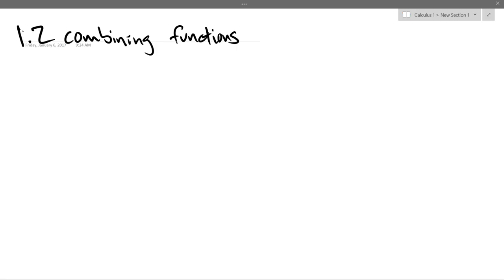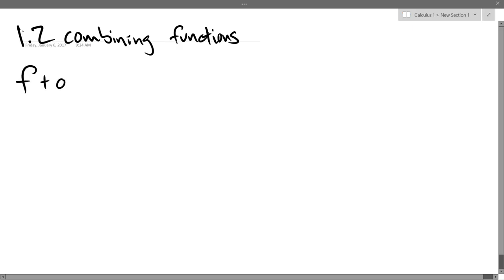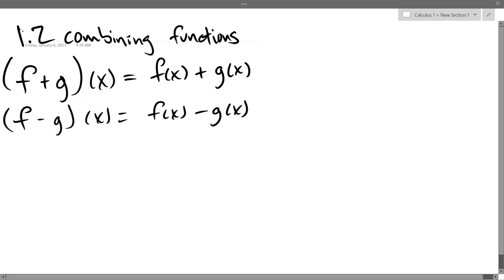All right, combining functions, we'll go with sum and difference first. So if you see two functions being added together, f plus g of x, what we really mean is f of x and g of x separately and add them together. Same thing with minus. And products, I will never use this notation because it's going to look a lot like function composition notation. The only difference is that little dot becomes a little circle, which could be very easily confused.